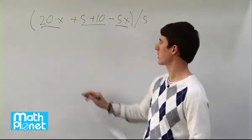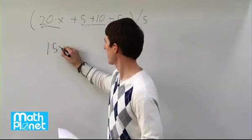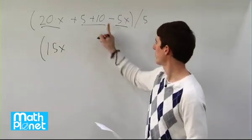So 20x minus 5x gives us 15x, 5 plus 10 gives us 15.